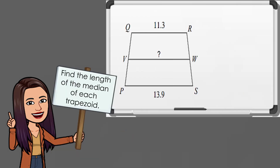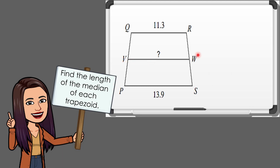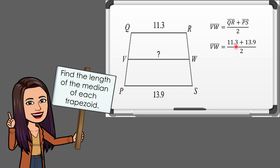Let us have the third one. We find the value of BW, which equals one-half the sum of QR and PS. Substituting the values, we have 11.3 plus 13.9 divided by 2, which equals 25.2 divided by 2. Therefore, the measure of BW, the median of this trapezoid, is equal to 12.6.